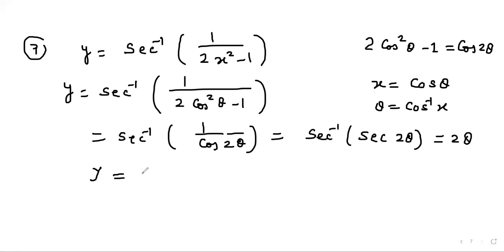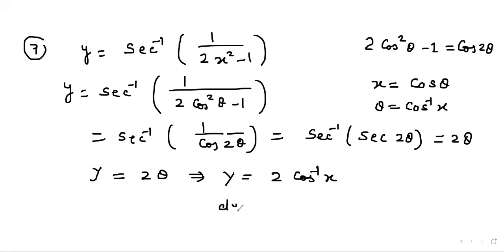Therefore y = 2θ = 2 cos⁻¹ x. Differentiating, dy/dx = −2/√(1 − x²). Thank you for watching.